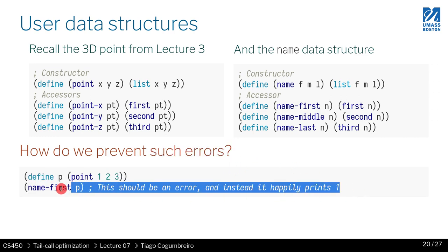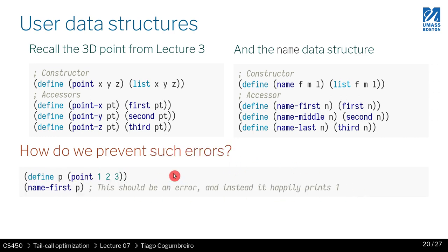Ideally you wouldn't want that, so you'd like some notion of a type — something that would distinguish values of points from values of names. If you just use plain old lists, that doesn't work.